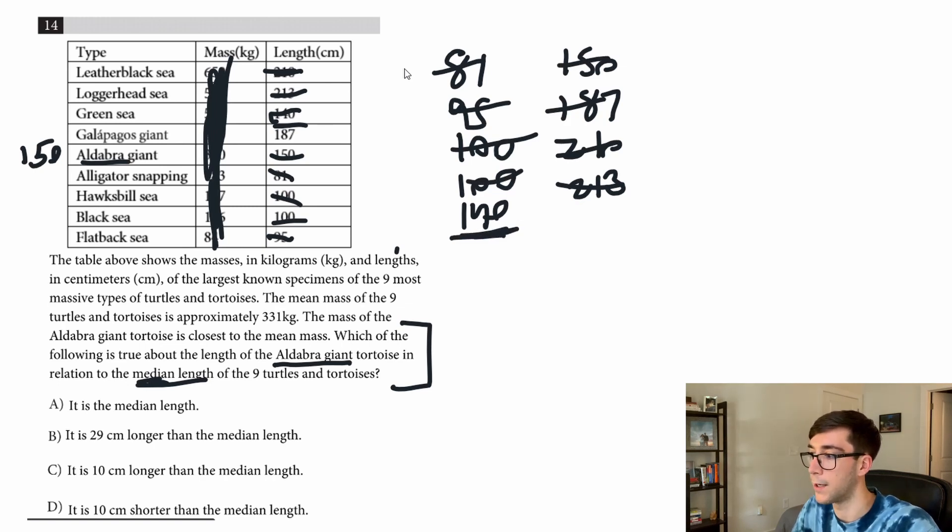And we are comparing the Aldabra giant tortoise to this. So it's 140 compared to 150. Ours is 10 more. So the answer is C. It's 10 centimeters longer than the median length.